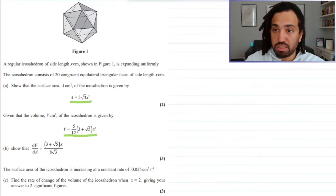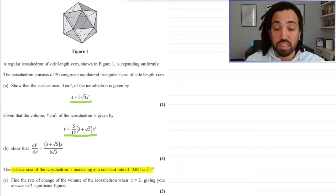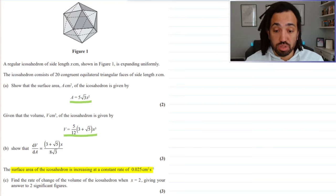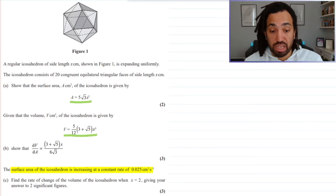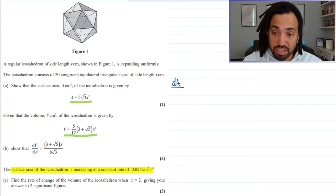Okay, so the next part, it's asking us for, it says the surface area is increasing at constant rate of. Now, when we hear that, where it says constant rate of, that means that we are differentiating with respect to t, with respect to time. So, I can write that the dA, surface area, by dt, time, is equal to 0.025.